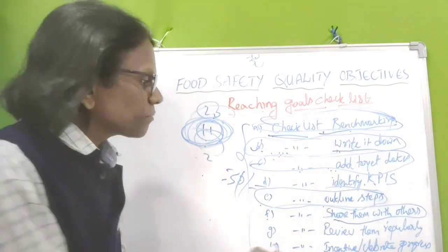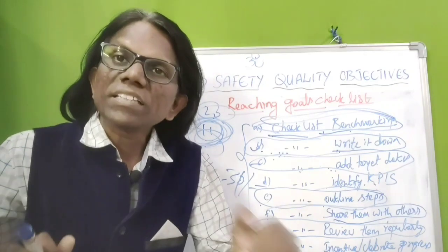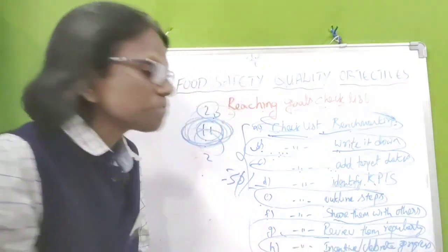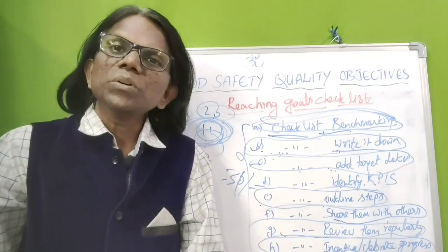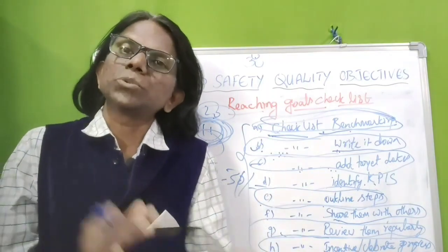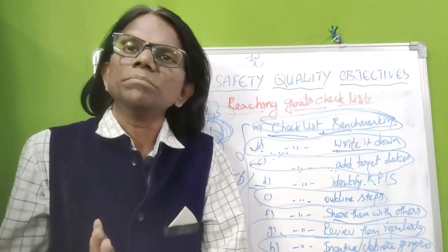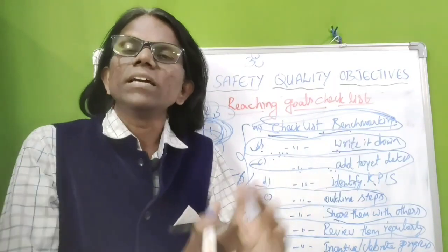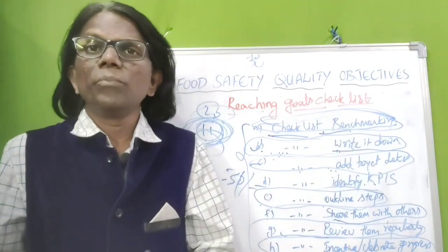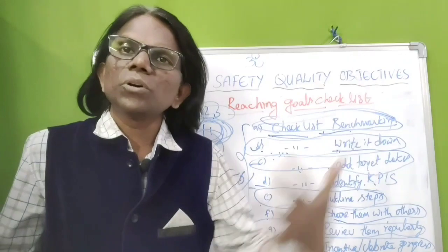Another item is to review the goals regularly and monitor progress. The last checklist item is incentives — celebrate the progress of goals. Give rewards and appreciation. If a goal is too ambitious, split it into sub-goals or mini sub-goals. For example, a one-year goal can be split into quarterly or monthly mini goals. Celebrating sub-goal achievements motivates employees to set new goals.